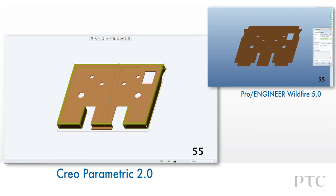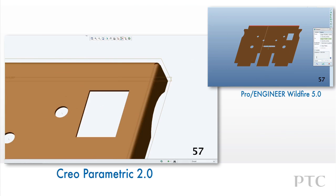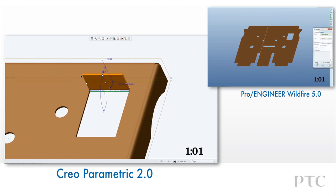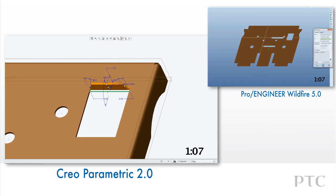Flat walls can now be added and offset from the attachment point by any distance. This allows us to create a tab in this area in one feature, rather than the two features it would have taken in Pro Engineer Wildfire 5.